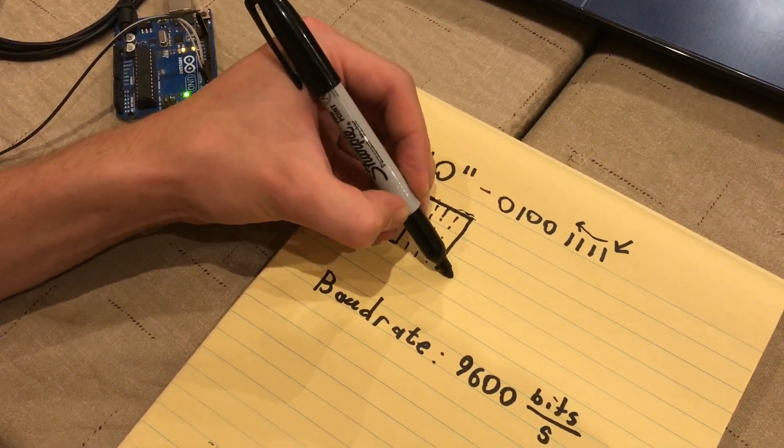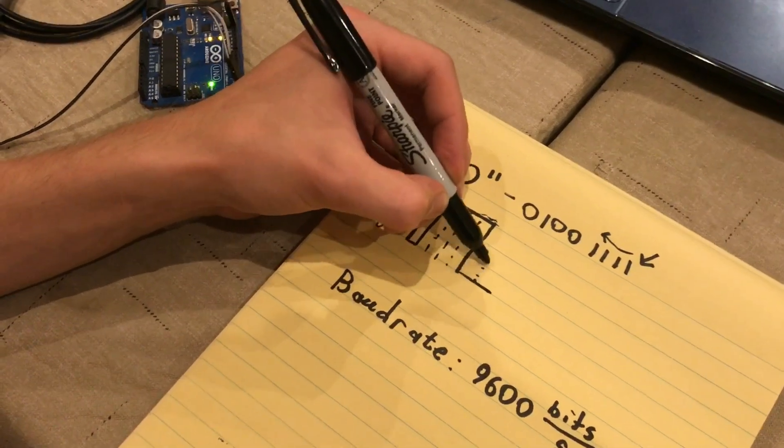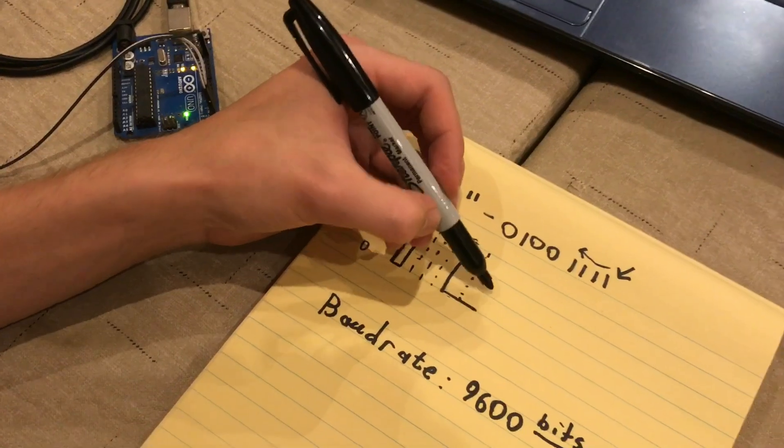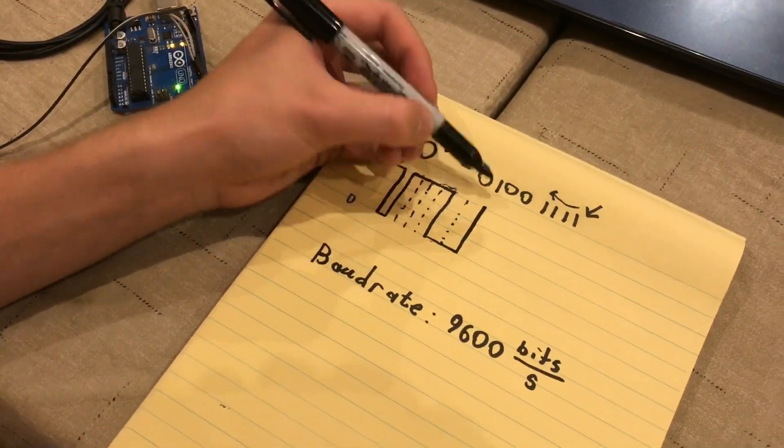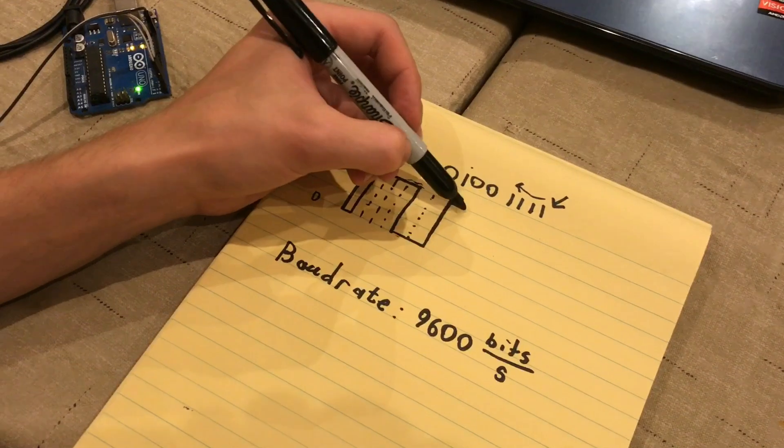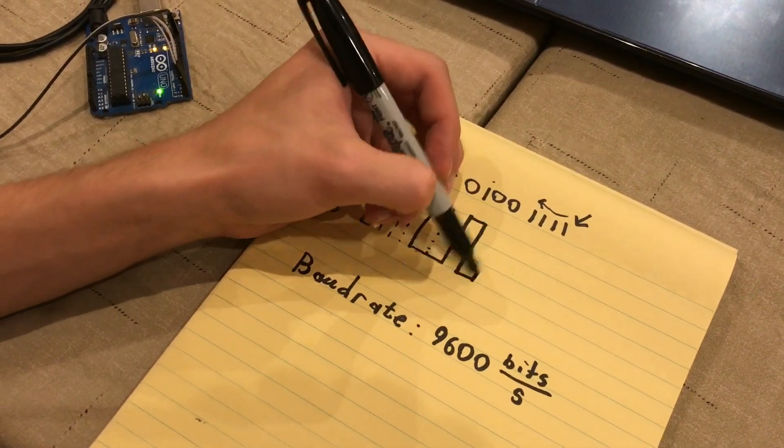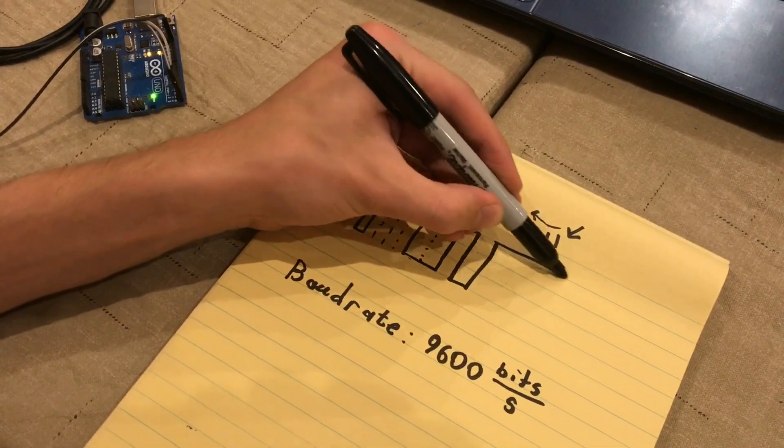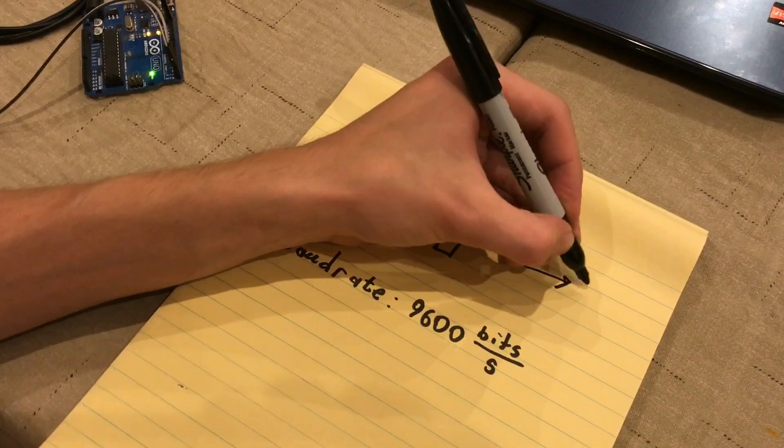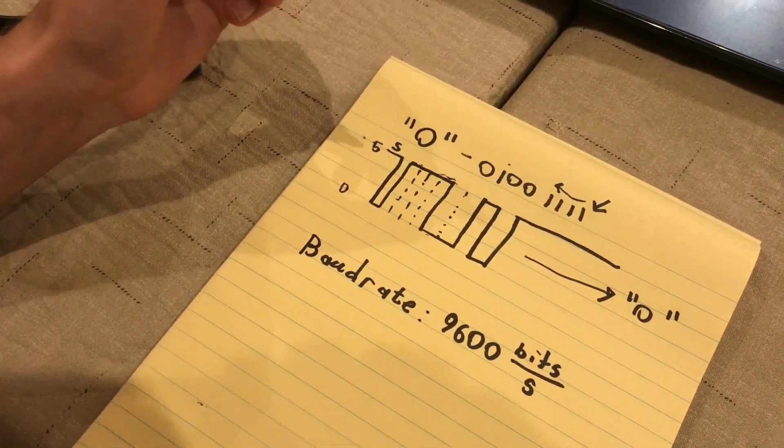So, we have 1, 2 zeros. We can draw our imaginary dotted line there after a cycle has passed. Back up to 5 volts for that guy there. And then back to 0 for our final one. And then to finish everything off, go back to 5, and it stays like that. So, this would transmit the character O.